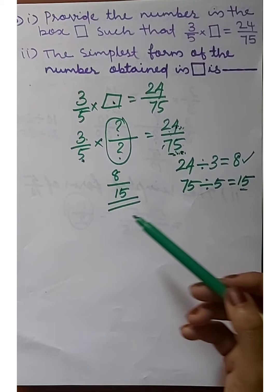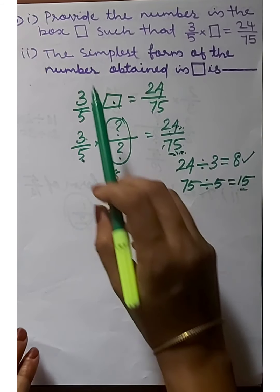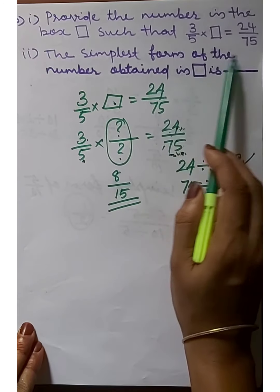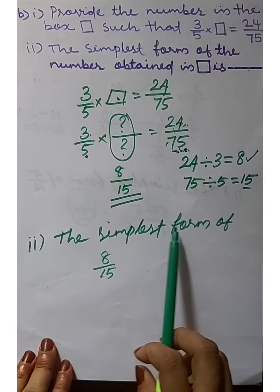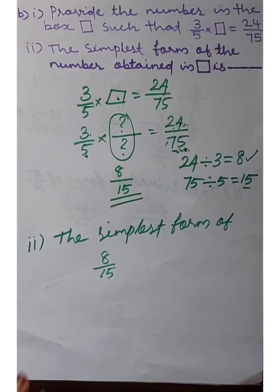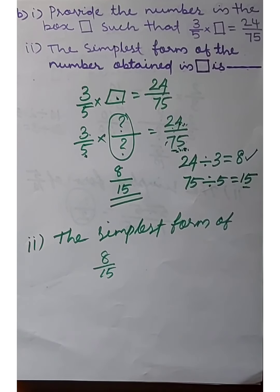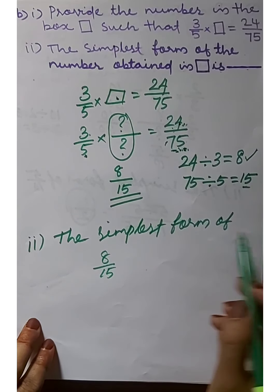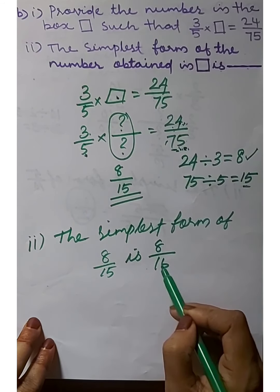The number in the box is 8/15. We find the simplest form of 8/15. The numerator is 8 and the denominator is 15. Since 8 and 15 have no common factors, the simplest form of 8/15 is 8/15.